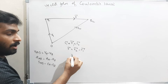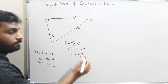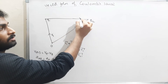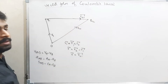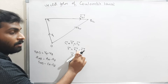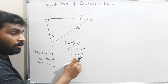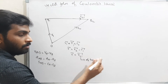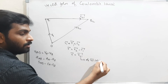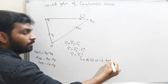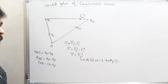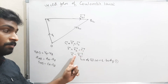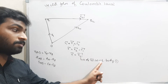r̄₂₁ equals r̄₂ minus r̄₁. The notations are very important: r₂₁ means the position of body 2 with respect to body 1, so the first subscript is the destination and the second is the reference. Always be careful with these subscripts.